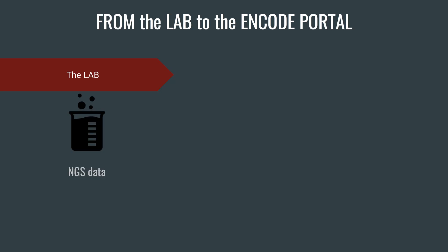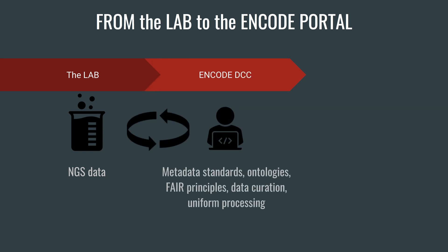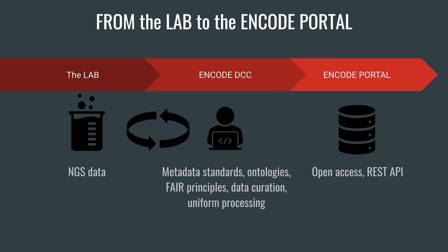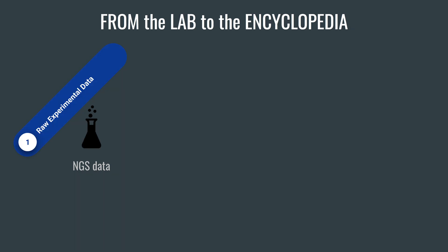To briefly describe what that process looks like: first, labs produce next-generation sequencing data and provide this to the DCC. The DCC applies standards to adhere to FAIR principles, which focus on making the data findable, accessible, interoperable, and reusable. Additionally, the DCC processes the raw data on uniform pipelines in order to generate processed results with minimal artifacts. This can take multiple iterations, and labs communicate with the DCC throughout this process. Once the standards are met, the raw and processed data is made publicly available on the ENCODE Portal, which allows anyone to download data they're interested in, either through the website user interface or programmatically through the REST API. These results comprise the encyclopedia, and here is a simple diagram explaining the life cycle of the genomic data in this process.